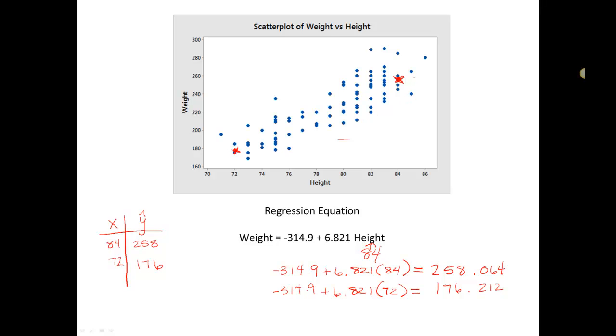And now, if I connect these two points with a line, then I have my regression line plotted right there onto my scatter plot.